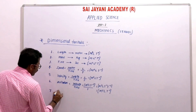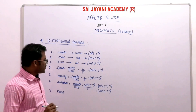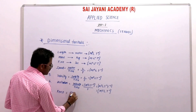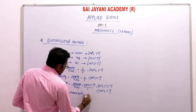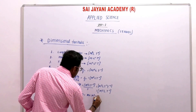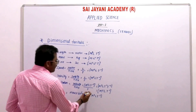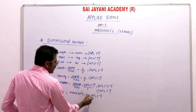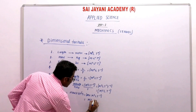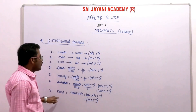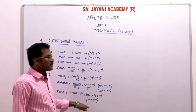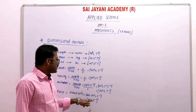The seventh quantity is force — a very important dimensional formula that helps with many other quantities. Force is the product of mass and acceleration. Mass contributes M, and acceleration has dimensional formula M⁰ L T⁻². Adding the powers: M becomes 1 plus 0 equals 1, L stays as L, T⁻² stays. So the dimensional formula for force is M L T⁻².